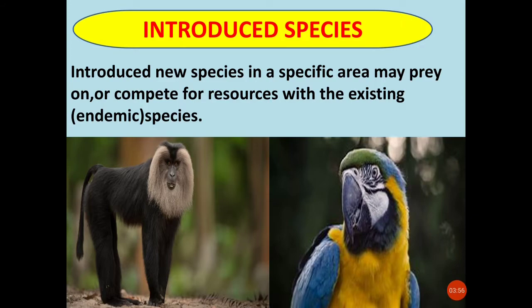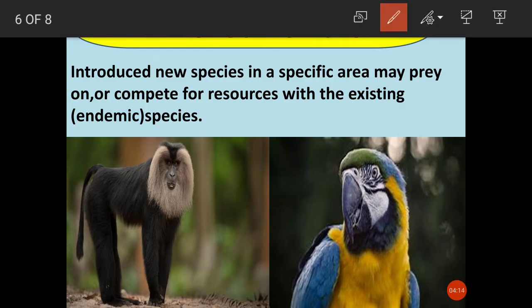Another reason for extinction or threat is introduced species. Introduction of new species can have a significant impact on endemic species. New species introduced into a specific area where endemic species are found may prey on or compete for resources with them. As a result, the endemic species may not be able to survive and may become extinct.